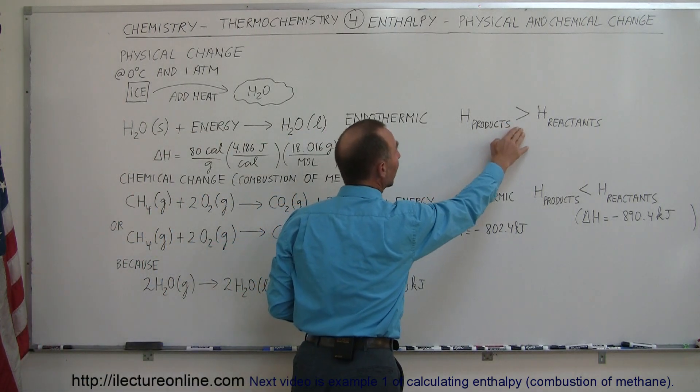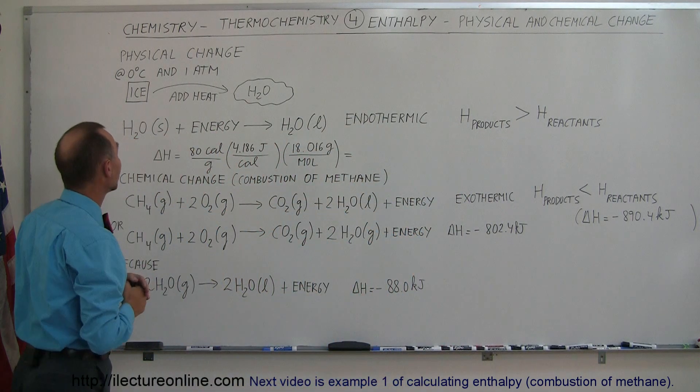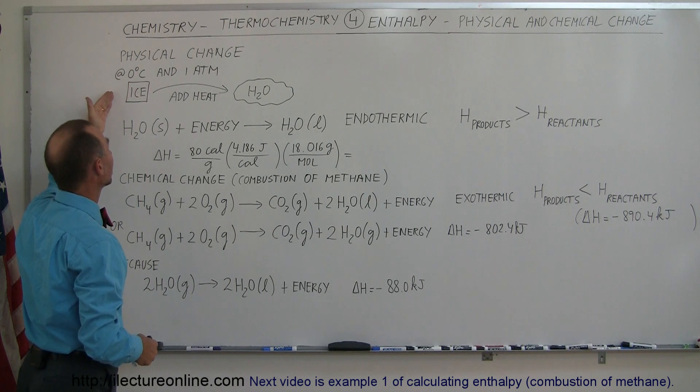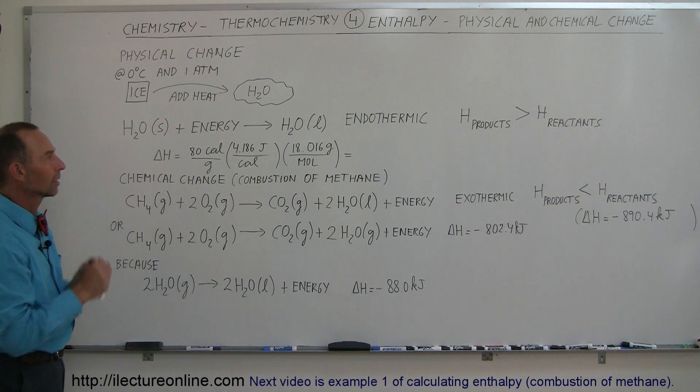The enthalpy of the products are greater than the enthalpy of the reactants. It can only happen if you add heat to the process here. Typically, ice will start at 0 degrees centigrade before it starts melting, and this whole process needs to be done at one atmosphere.